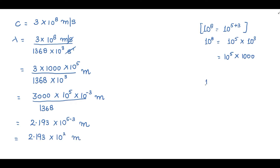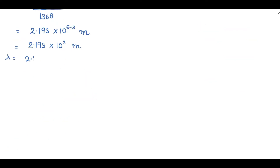Now 10 raised to power 2 means there are two zeros, so simply put: lambda equal to 2.193 into 100, units meter only. Lambda equal to 219.3 meter.